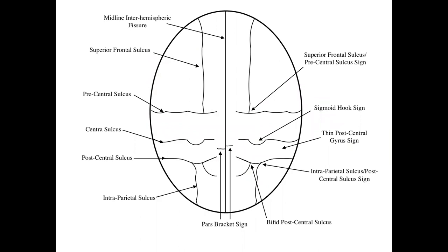To remember the various sulci and gyri, use an axial slice oriented like a clock. From the 12 o'clock to 6 o'clock position, the straight line is called the interhemispheric sulcus, separating the two cerebral hemispheres. From 1 o'clock to 3 o'clock is the superior frontal sulcus. At the 3 o'clock position is the precentral sulcus.